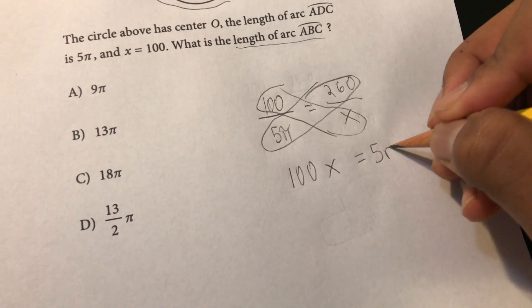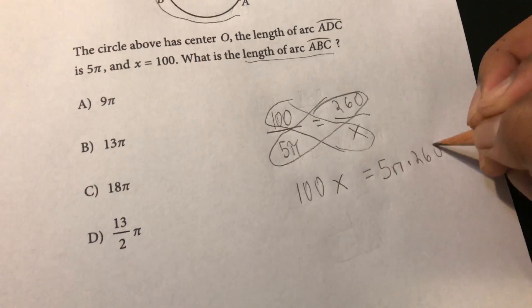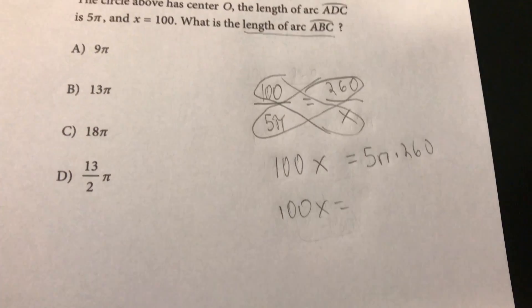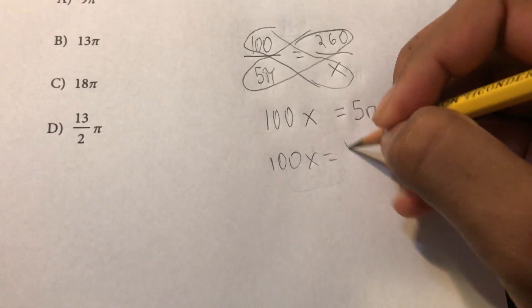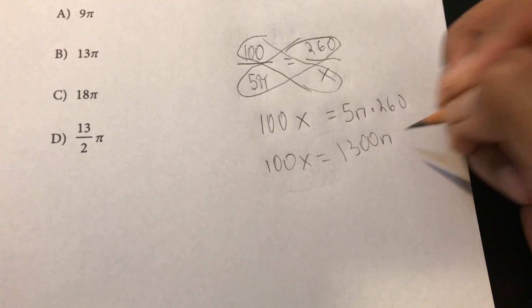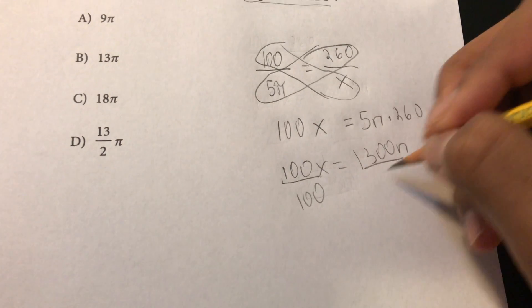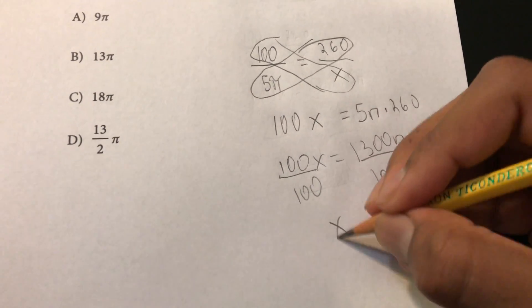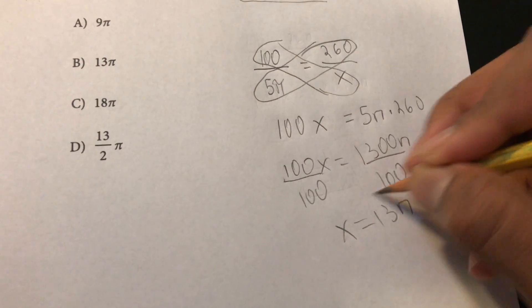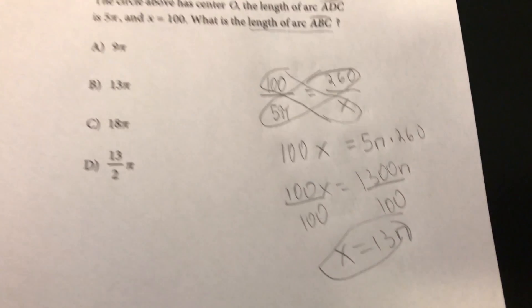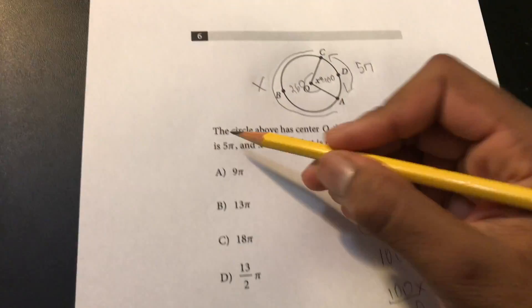Equals 5π times 260 which then gives us that 100x is equal to 1300π and now all we have to do is divide by 100 on both sides and we're left with x equals 13π and that will be our answer which is going to be B.